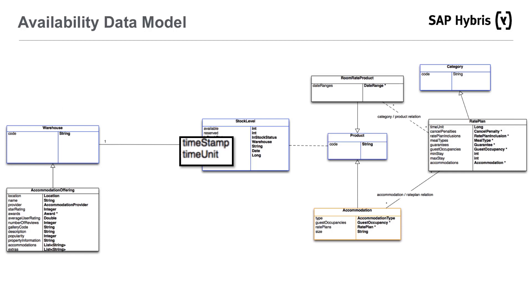The main customization applied to the standard out-of-the-box data model is the addition of temporal indicators on the stock level. Intuitively, the stock level in this way can represent availability for a certain day or night. Even if not used in the current implementation, it is also possible to define a time unit so that many stock levels could be used for one day, for hourly booking like meeting rooms for example.